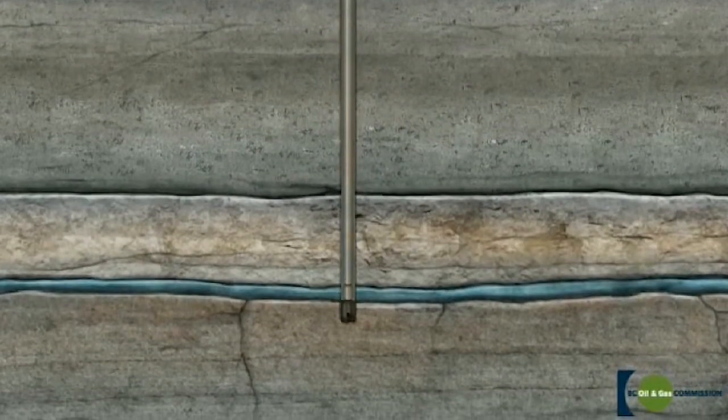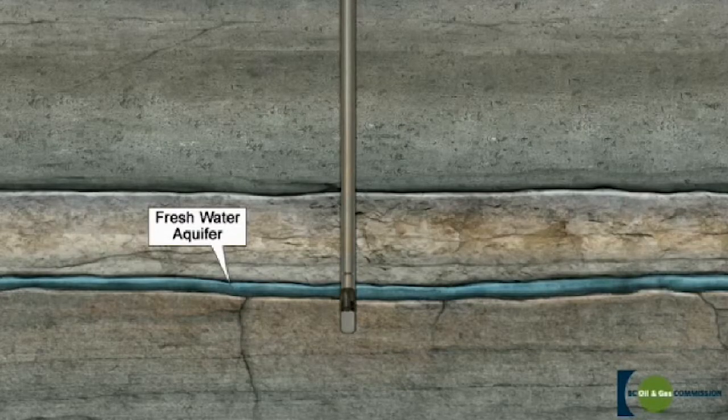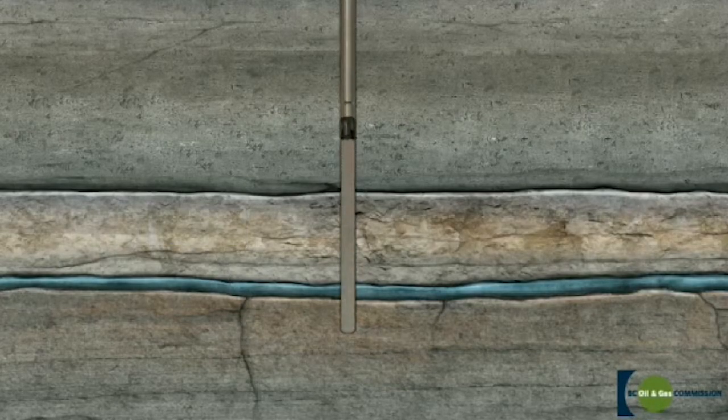Similar to a vertical well, the hole is drilled to just under the deepest fresh water near the surface. The drill pipe and bit are then removed.